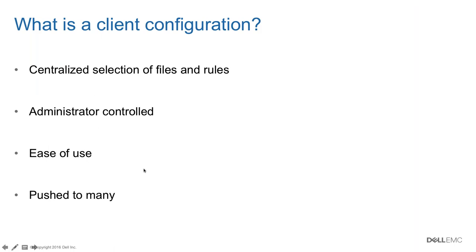A client configuration is a centralized set of rules and file selections that you can make from within the admin console, allowing you as an administrator to push those rules out to your audience. It's beneficial because you don't have to rely on end users making correct selections — instead you're controlling what they select, guiding them, or if you want total control, locking it down completely.